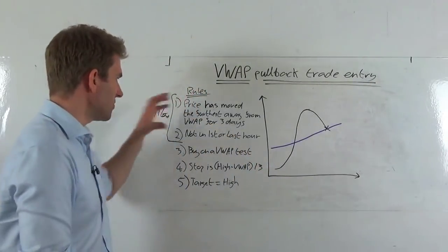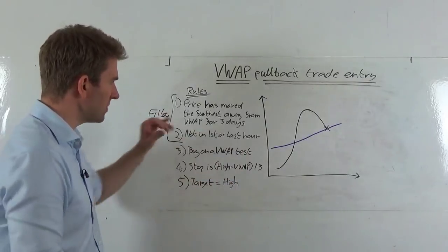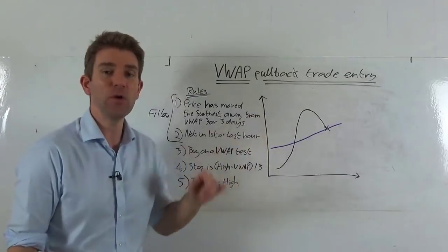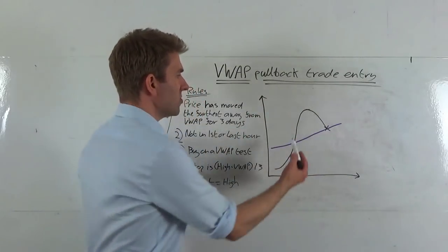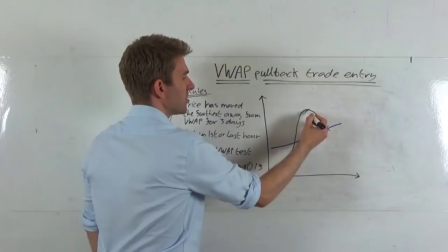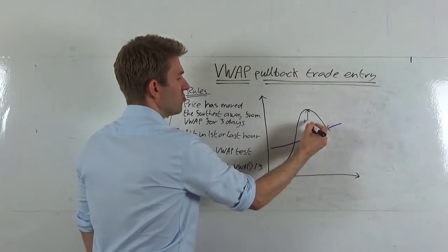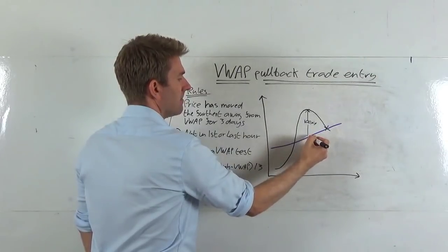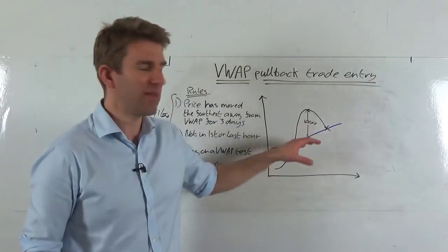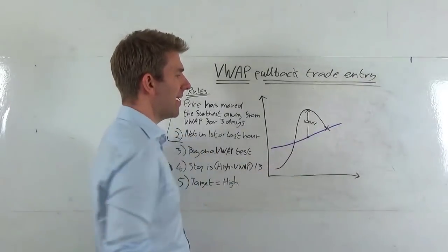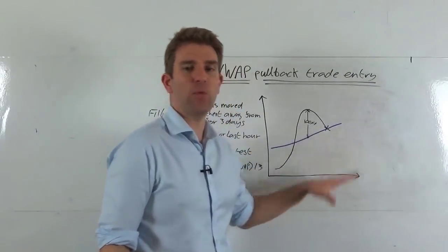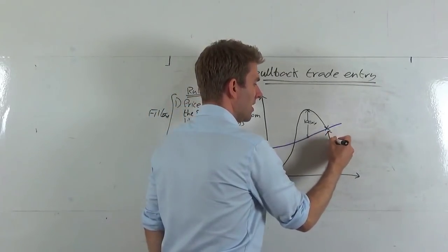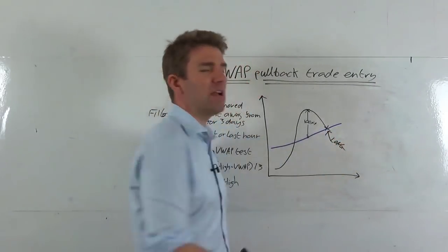So there's your two filters. Now we're going to look at the rules. Once you've got those filters and they've both got a tick on those, we look at number three. We're going to buy, in the case of a long, on a VWAP test. So here's the VWAP, price has pushed up, we've got an excursion away from it. Let's just call this excursion 100 pips away. I'm going to use pips, it could be ticks, it could be cents, whatever it may be. You get the idea. 100 pips away. We come back to the VWAP now and the first test of the VWAP, we buy it. We buy here.